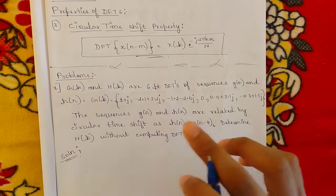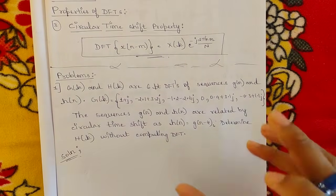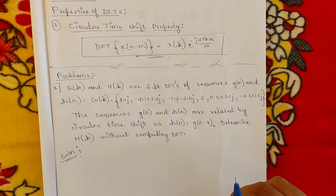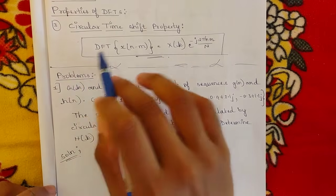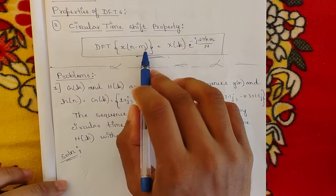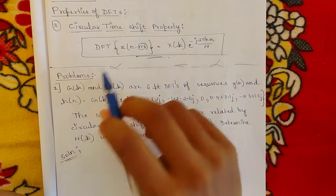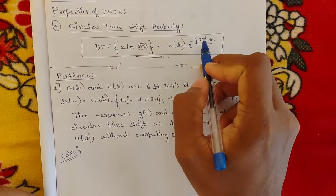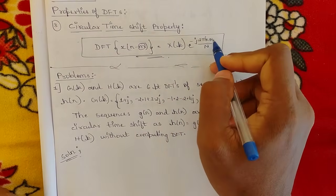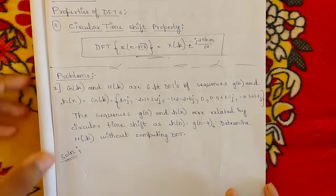Even if you have not seen my previous DSP videos, they are available in our playlist covering all modules. Now, the circular time shift property states that the DFT of x(n − m), where m stands for the number of time shifts, is equal to X(k) · e^(−j2πkm/N). This is the circular time shift property formula.